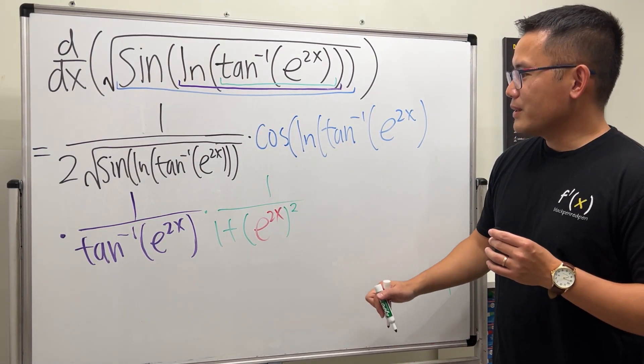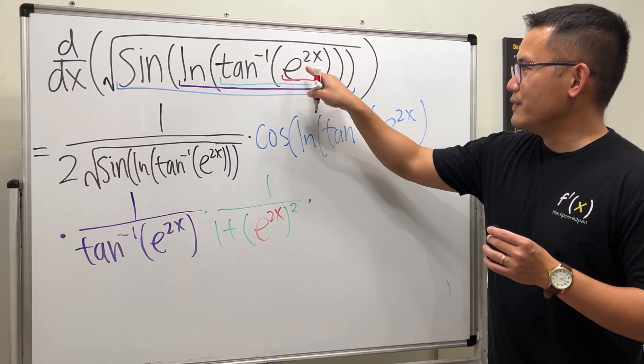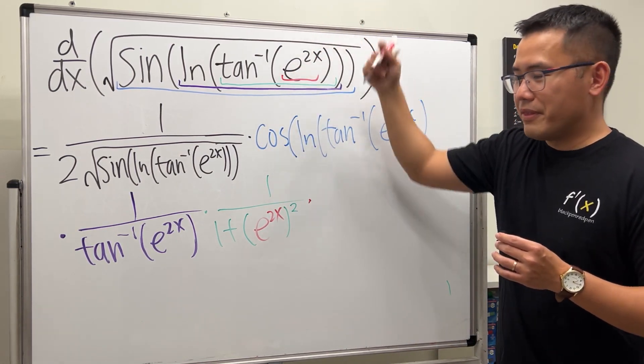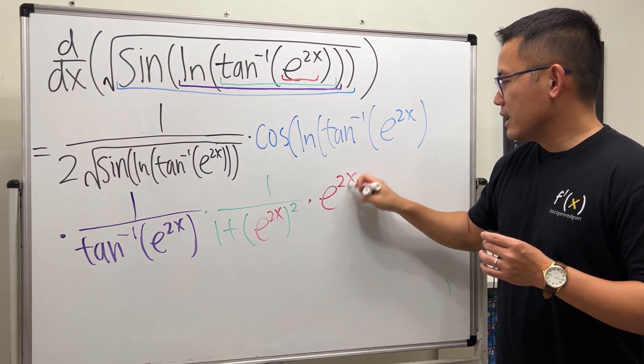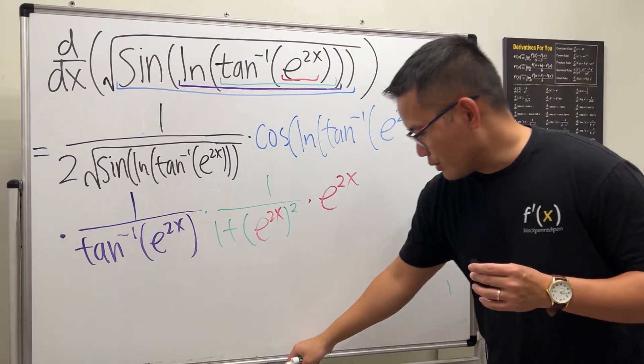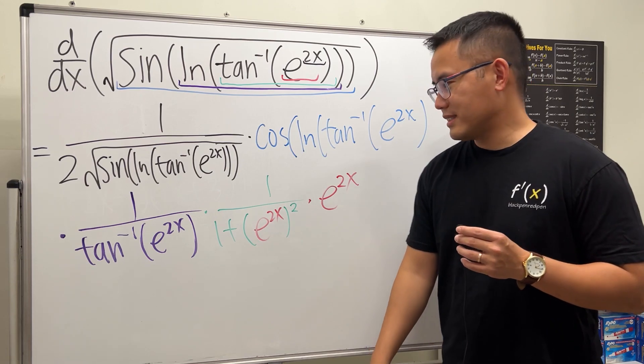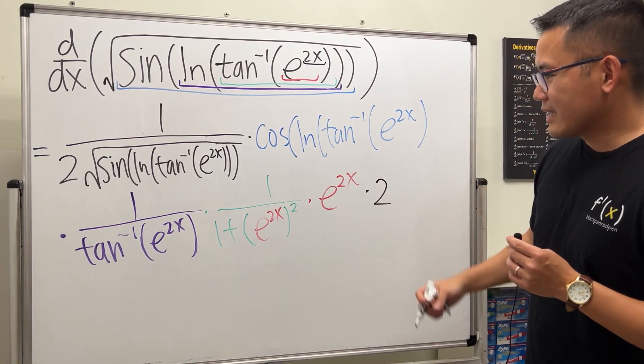And then we are going to multiply by the derivative of this. The derivative of that is e to the same thing. So e to the 2x. And lastly, I also run off the colors. So let's just repeat from the original. So here. Multiply by the derivative of the 2x. So multiply by 2. Like that.